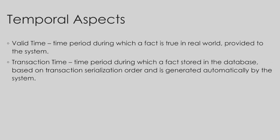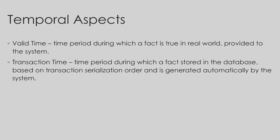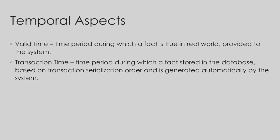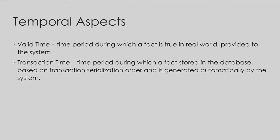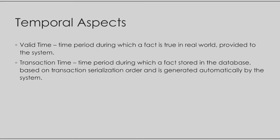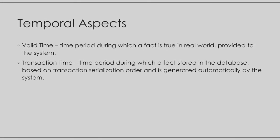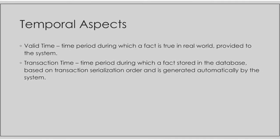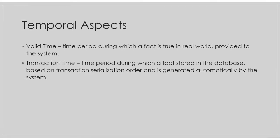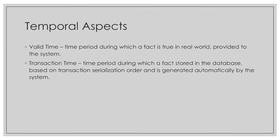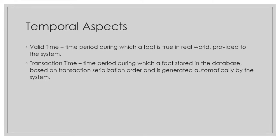There are two different aspects of time in temporal databases. The first one is the valid time, which is the time period during which a fact is true with respect to the real world. The second is the transaction time, which is the time generated by the system when a particular fact is stored in the database.